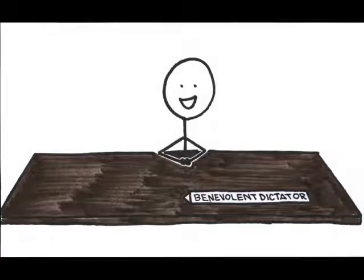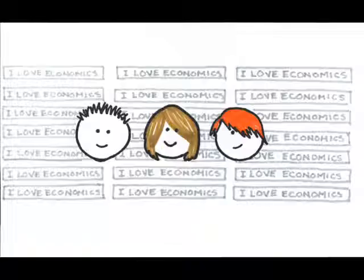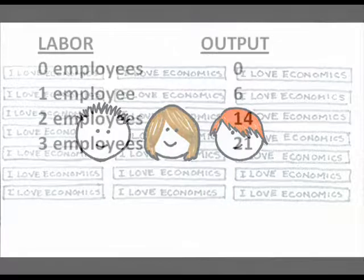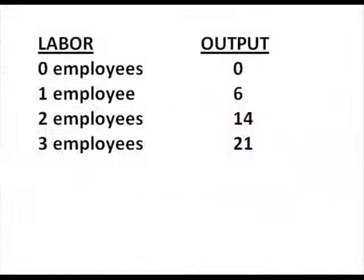Now I hire a third employee, Oliver. Note that with the addition of Oliver to the team, I still get more output, but not as large a boost as I got when I hired Angelina. However, since my output is still rising — this time half again as many employees yield half again as much output — so I have constant returns. I will continue to hire workers.